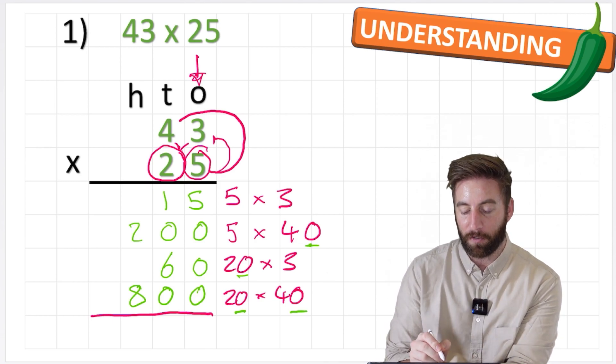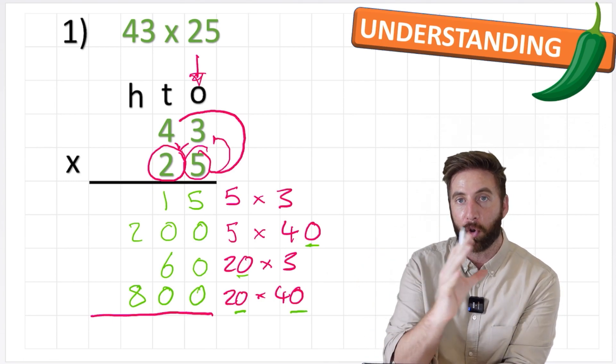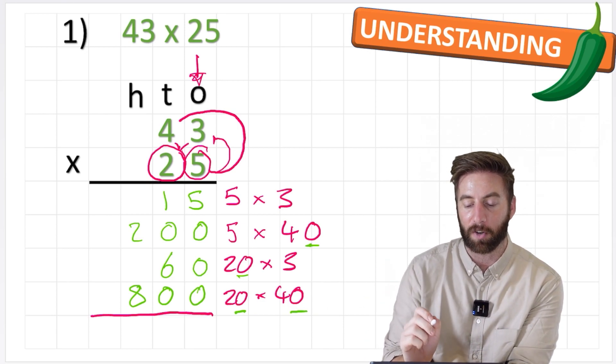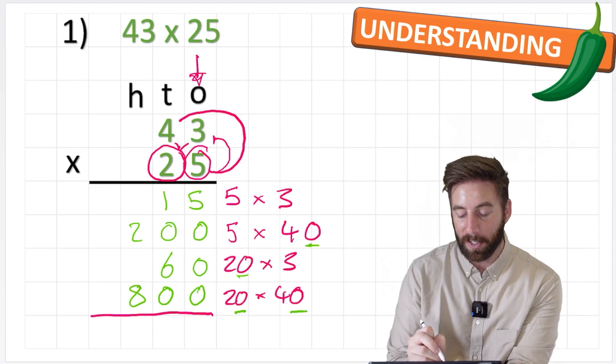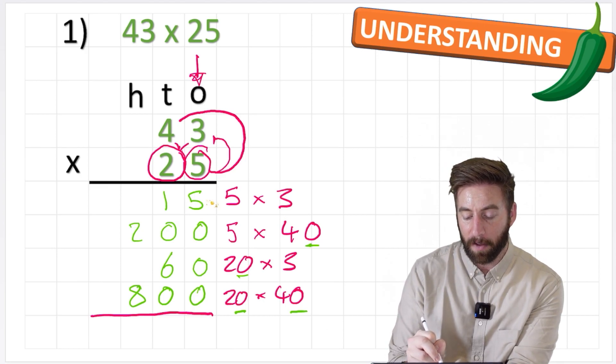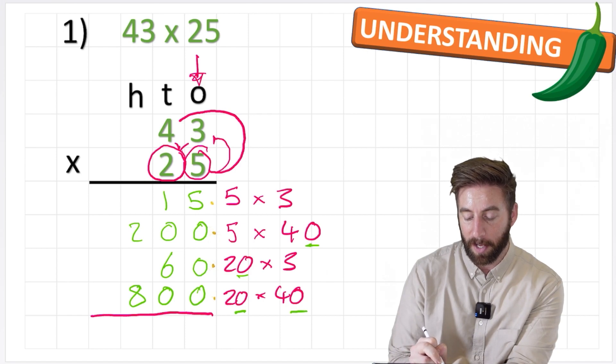Looks finished but is it? No, not yet because so far we've partitioned our number. We've broken it all down into the individual parts. Now I need to smash it back together to add it all up. So now I'm going to add up all of these individual parts. So if I start with my 1s, I've got 5, 0, 0, 0. That equals 5.